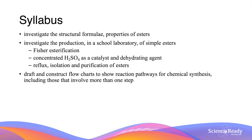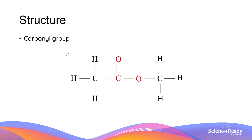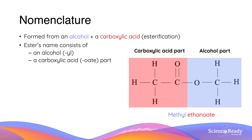In this video we will be talking about the new functional group esters. The ester functional group contains a carbonyl group, which is a carbon atom double bonded to an oxygen atom. What makes an ester special is that the carbonyl carbon atom also forms a single covalent bond with another oxygen atom. An ester is formed from reacting an alcohol with a carboxylic acid functional group, and this reaction is referred to as esterification.